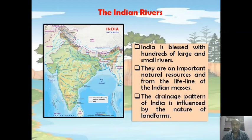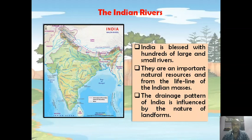The drainage pattern of India is influenced by the nature of landforms. We have already read about it in the chapter called the Relief of India, where we have seen that India is made up of different types of landforms like plateau, plain, and mountain. All these landforms have their influence upon the drainage pattern in our country.